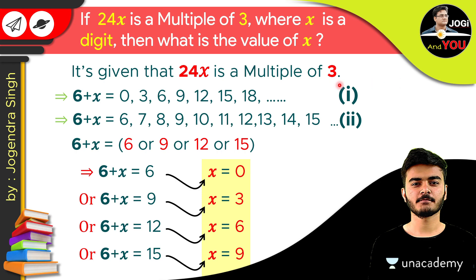Now just recall all the things we did. We have the number 24x which is a multiple of 3, meaning it is totally divisible by 3. So 2 plus 4 plus x — that is 6 plus x — is also divisible by 3. Comparing both conditions, we get the filtered values 6, 9, 12, or 15 for 6 plus x, giving us x equals 0, 3, 6, or 9. This is the required answer, satisfying both conditions.